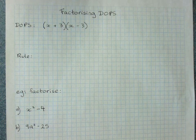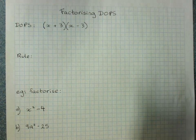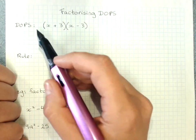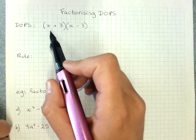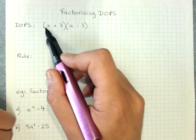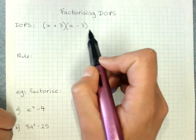Factorizing a difference of perfect squares. So a quick reminder of how we get a difference of perfect squares is here I have x plus 3, x minus 3.